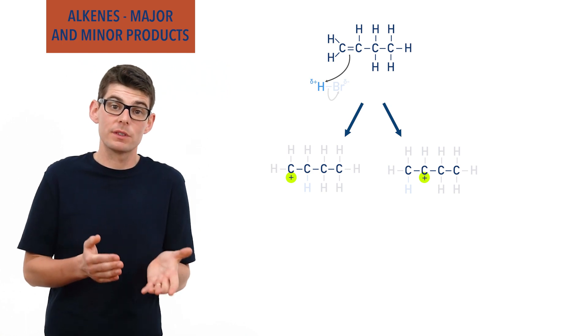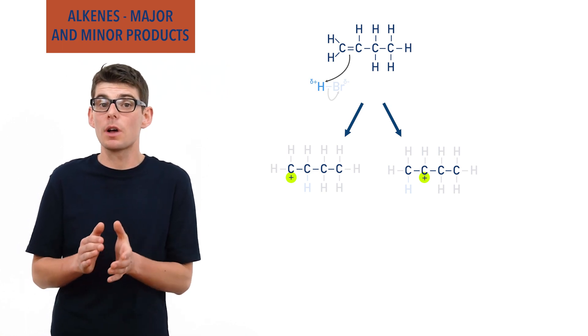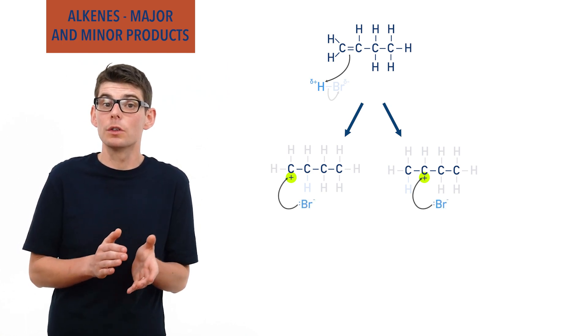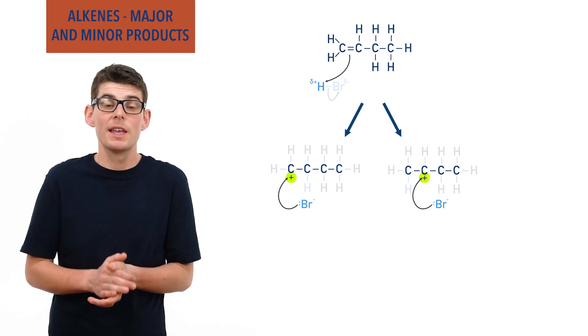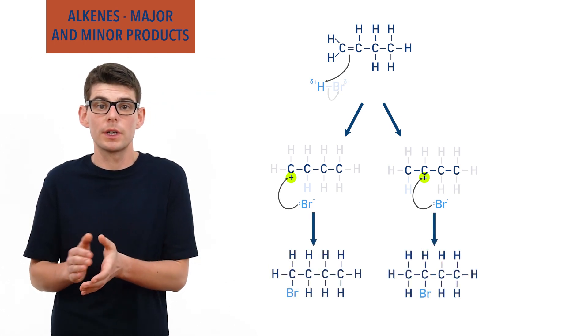Now, in the second step, there are two possible carbons that the halide ion can bond to, giving two different possible products.